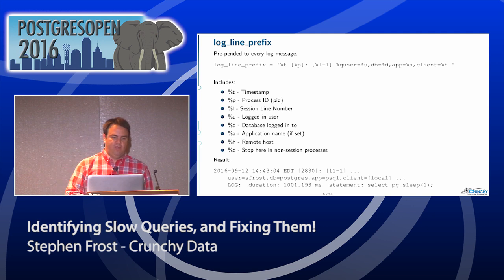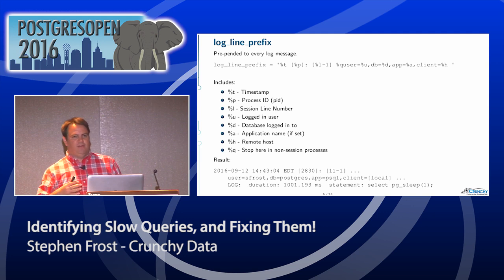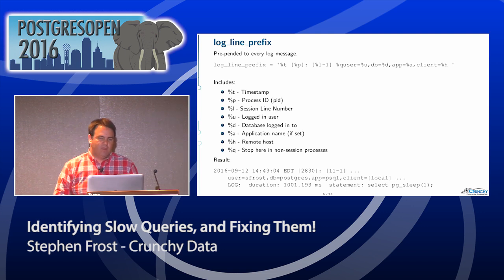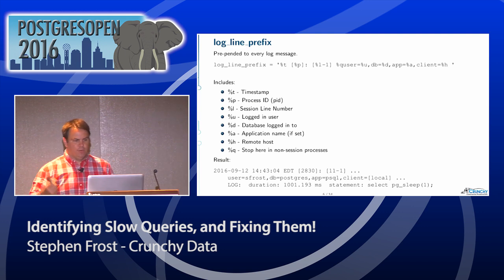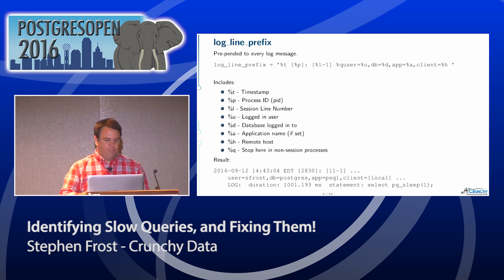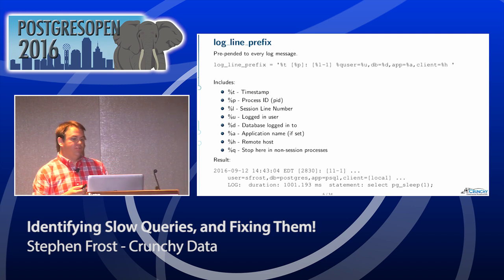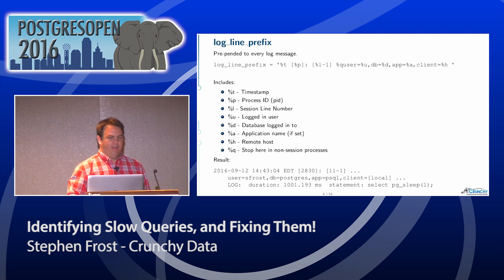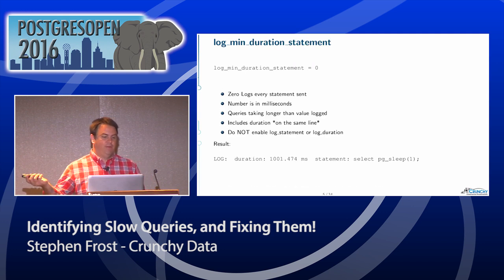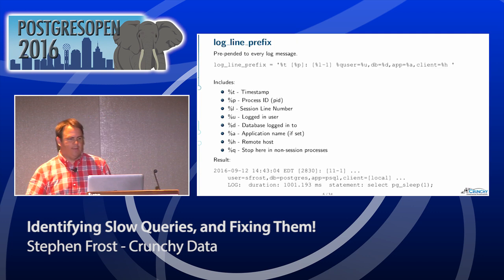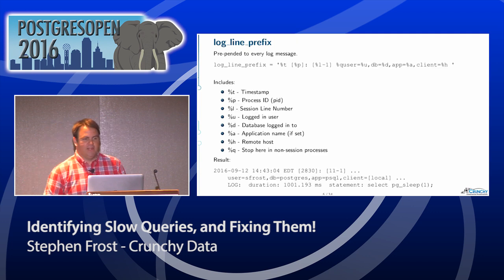And then of course the remote host. The percent-q basically means stop adding a log line prefix when we hit this. Here we have a simple statement which includes this log line prefix — that's got a lot more information on it than the prior one which just had log duration statement. This one includes the timestamp and other information really necessary to do the analysis you want.